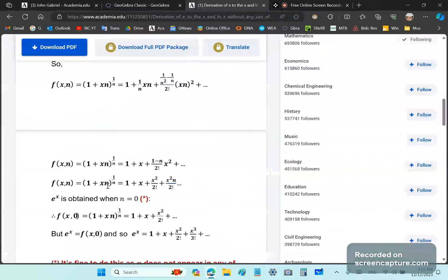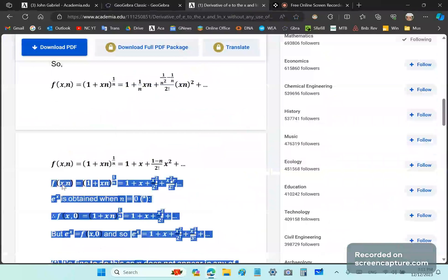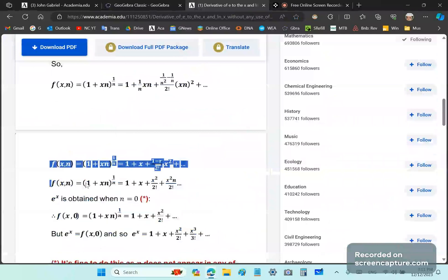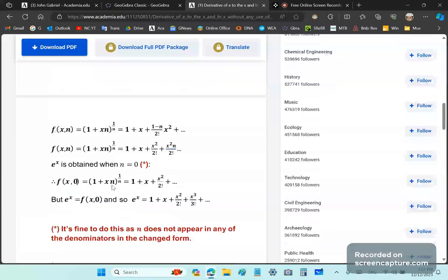Ultimately you have this expression here. In this row, all the n's in this expression will be in the numerator, so you can actually set n equal to zero and then find e^x, because e^x is obtained when n is equal to zero.